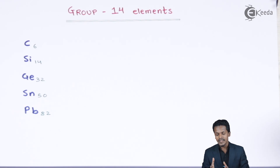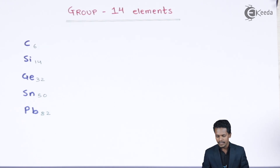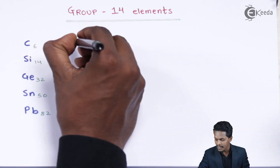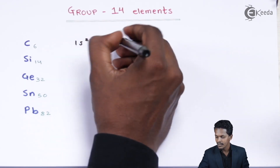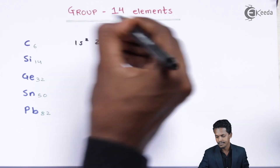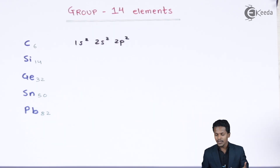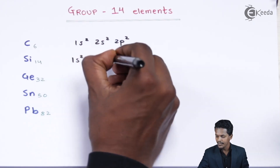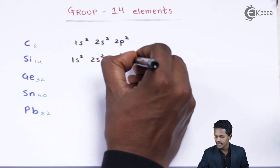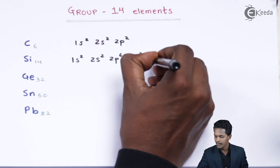When we talk about the electronic configuration, it is quite easy to estimate and represent. For carbon it is 1s², 2s², 2p². For silicon it is 1s², 2s², 2p⁶, 3s², 3p².